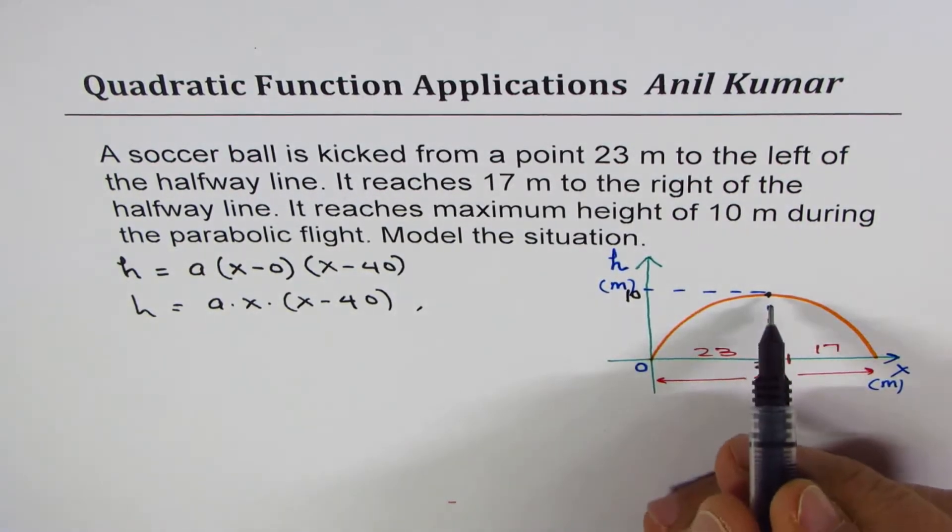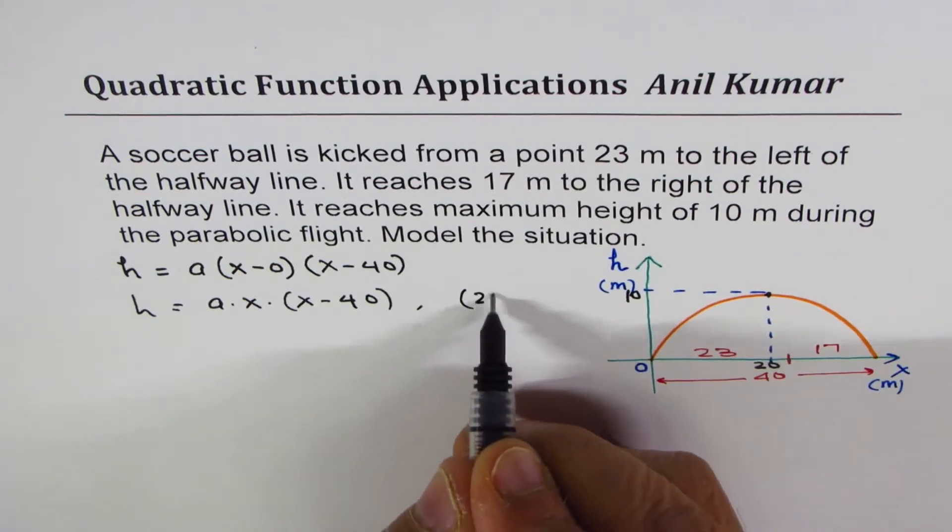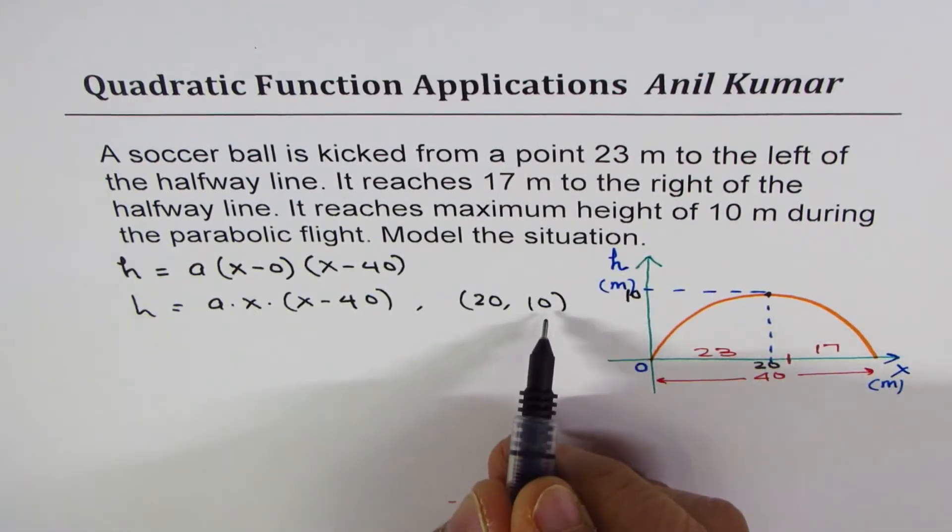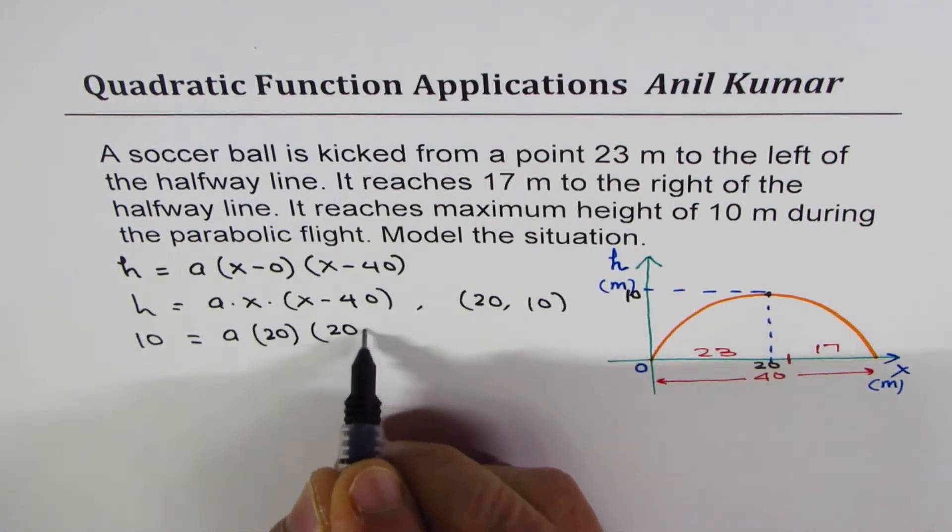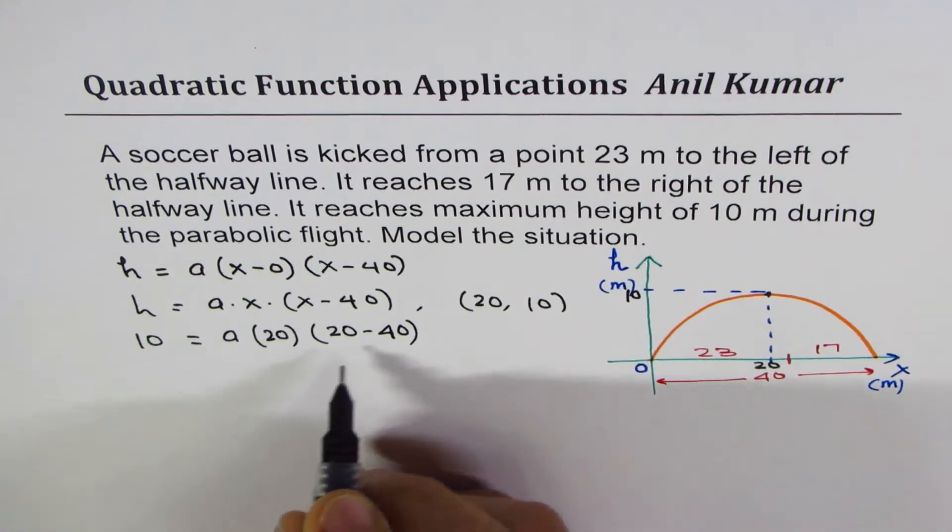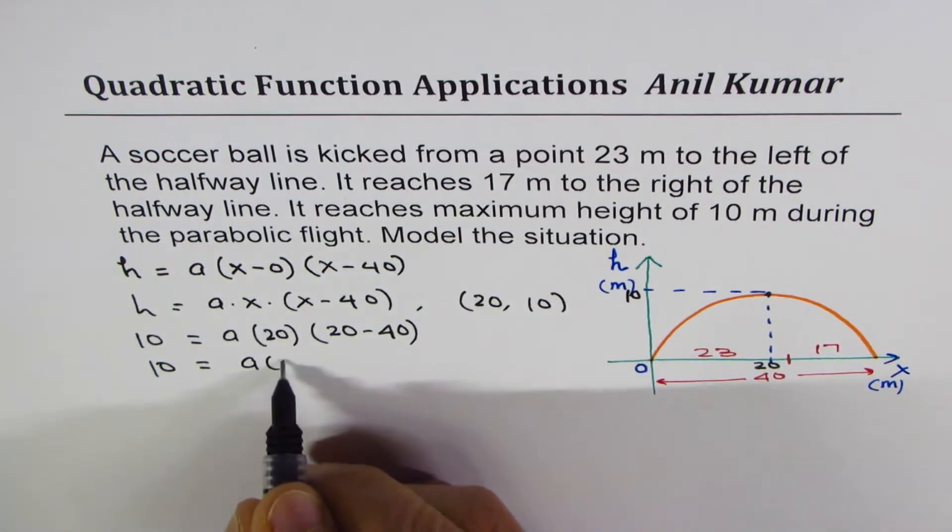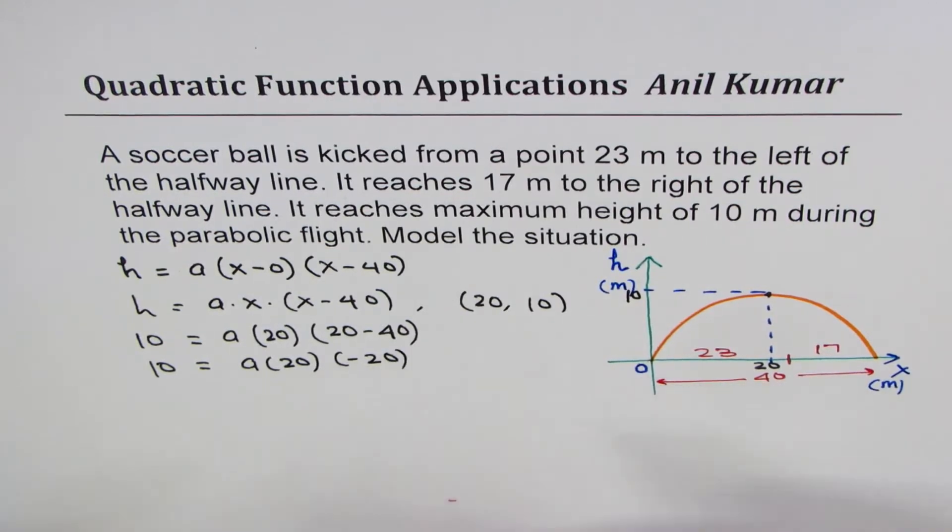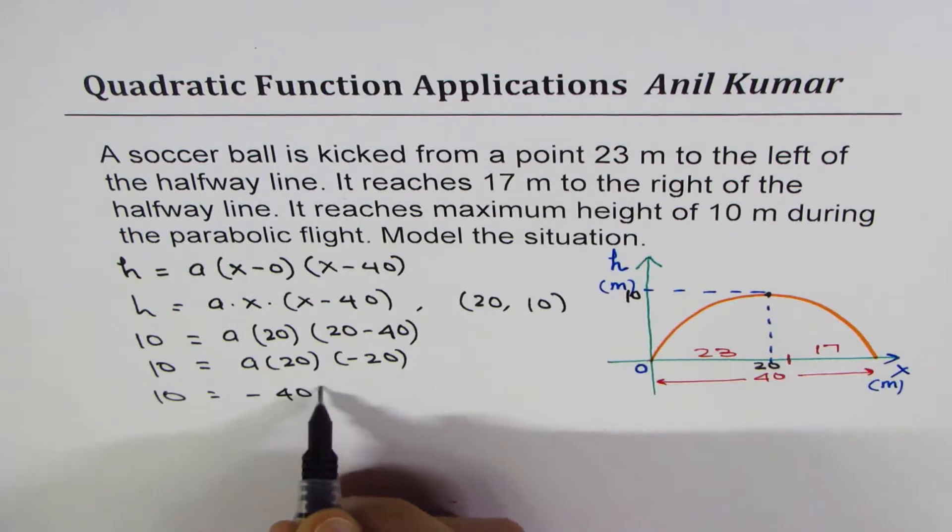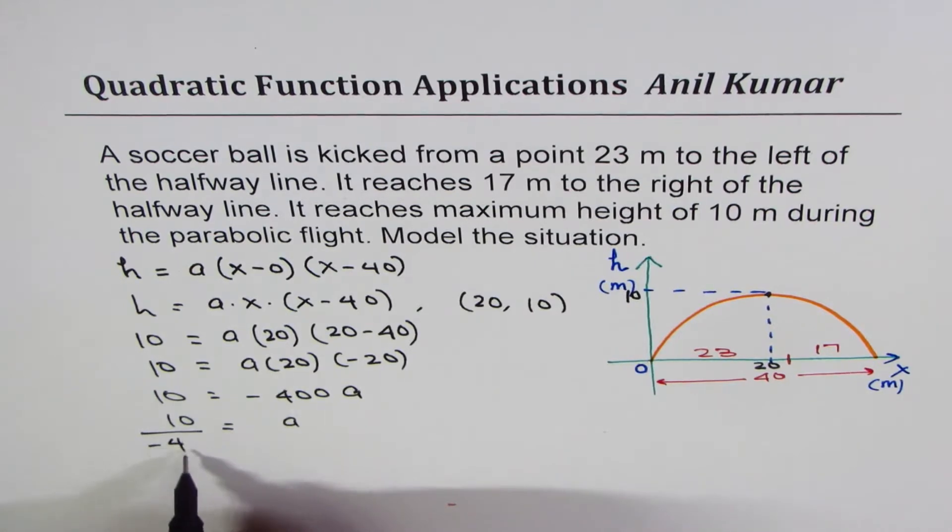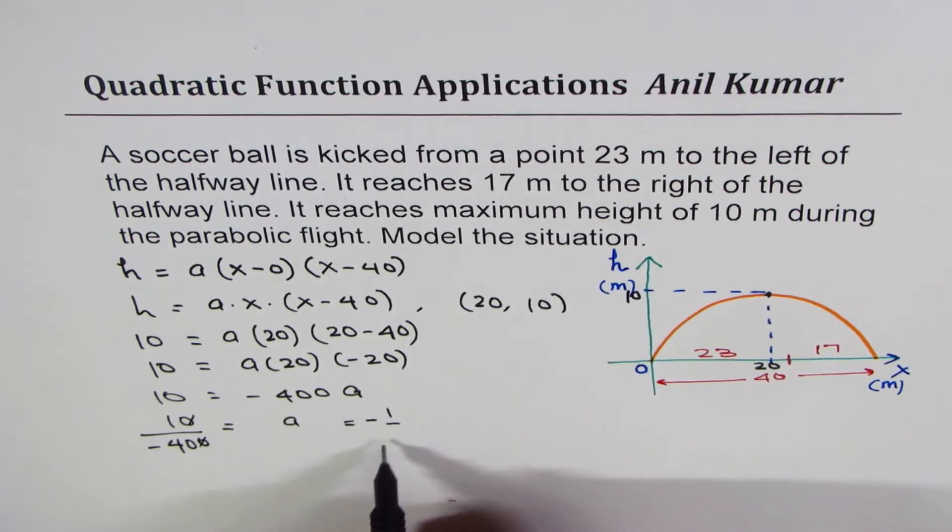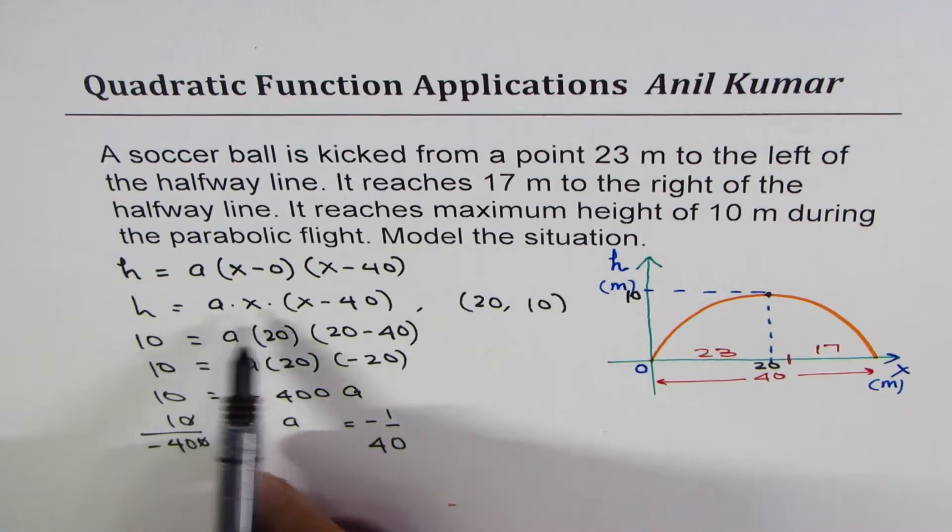To find the value of A, we can use the maximum point reached. That is reached at a distance of 20. Maximum point is 10. So we'll replace H with 10, A times X is 20, so we'll write this 20, times within bracket 20 minus 40. That gives you 10 equals to A times 20, times minus 20, or 10 equals to minus 400 A, and that gives you A as 10 divided by minus 400. So you can cancel this, and you get value of minus 1 over 40, so once you know A, you can complete your equation.